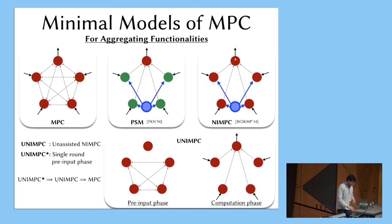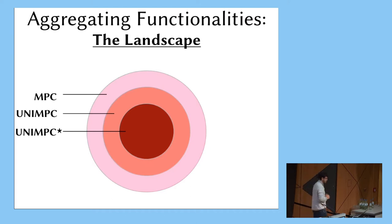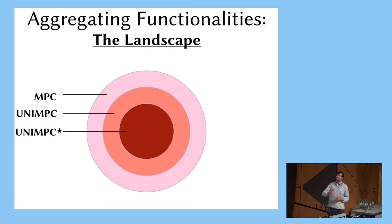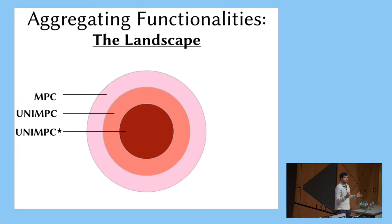Let me show you the results. This is a landscape where every point is supposed to be a functionality. We have three sets: the set of functionalities which have MPC protocols, and some subset of them have UNIMPC, and some subset have UNIMPC* protocols. We don't fully understand what these sets are, even after our work.